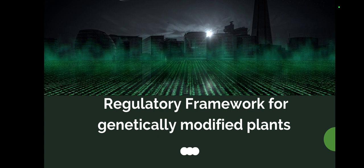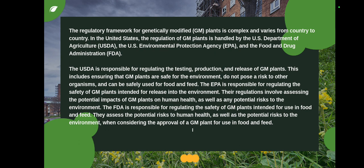The regulatory framework for genetically modified plants is complex and varies from country to country. In the United States, regulation is handled by the USDA — United States Department of Agriculture — the EPA — U.S. Environmental Protection Agency — and the FDA — Food and Drug Administration. The USDA is responsible for regulating the testing, production, and release of GM plants, ensuring they are safe for the environment and do not pose a risk to other organisms. The EPA is responsible for regulating the safety of GM plants in relation to the environment and assessing potential impacts on human health. The FDA is responsible for regulating the safety of GM plants intended for use in food and feed.